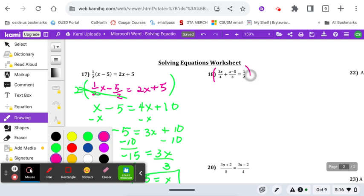This one to get rid of the 3, the 4, and the 2, our common factor would be a 12. 4 goes into 12 three times, 3 goes into 12 four times, 2 goes into 12 six times.